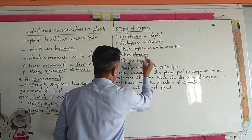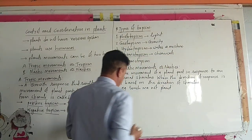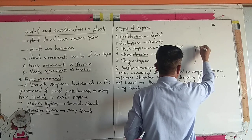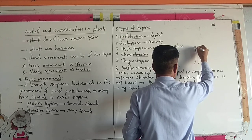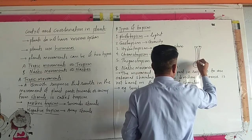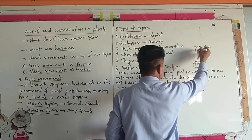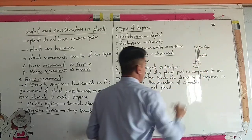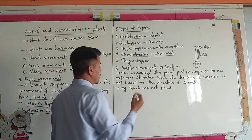Then chemotropism. Chemotropism means it is sensitive to chemicals. For example, in the pollen tube — when pollen grains reach the stigma, they form a pollen tube towards the ovule through the style. The movement or growth of the pollen tube towards the ovule is an example of chemotropism.